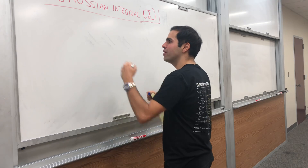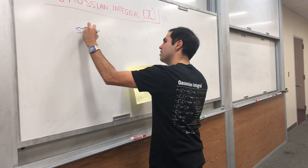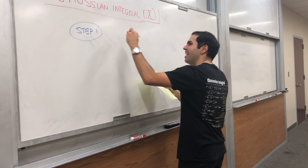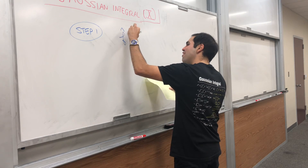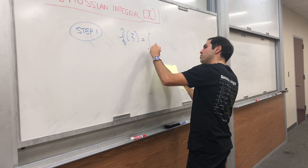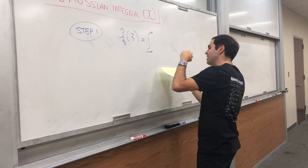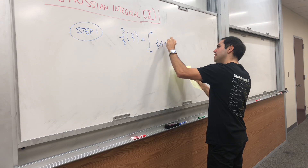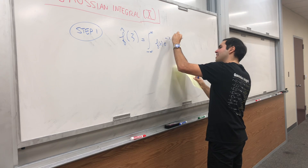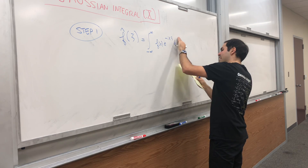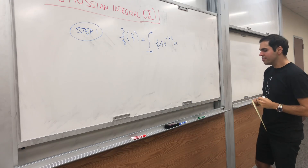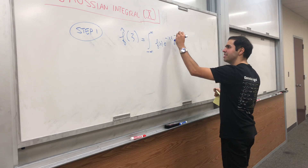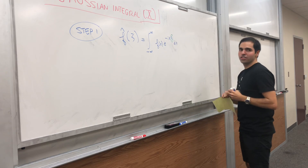So first of all, what is the Fourier transform? f-hat of ξ, the Fourier transform, is just the integral from minus infinity to infinity of f(x) e^(−ixξ) dx. Notice we are integrating with respect to x, so this indeed becomes a function of ξ.